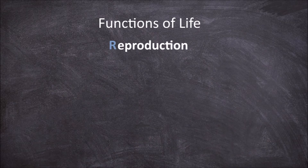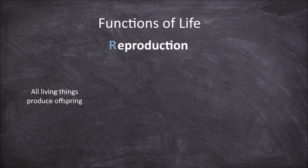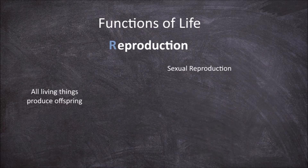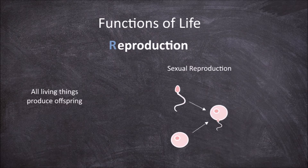Reproduction is another essential functional characteristic of life. All living things produce offspring. This may be through asexual or sexual reproduction. Asexual reproduction through binary fission or mitosis involves just one parent creating offspring that are genetically identical to the parent. Sexual reproduction involves the fusion of sex cells from two parents, creating offspring that are genetically unique.